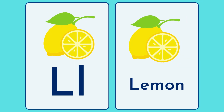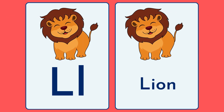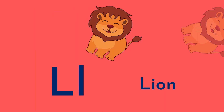Next, letter L. L L — lemon. Come on children, say with me: L L lemon. Next: L — lion. Say with me: L L lion.